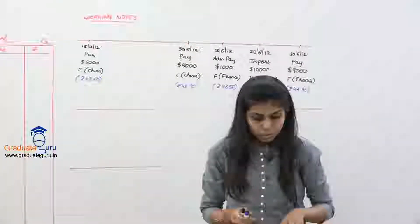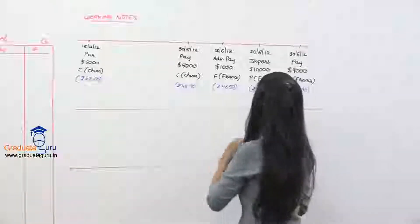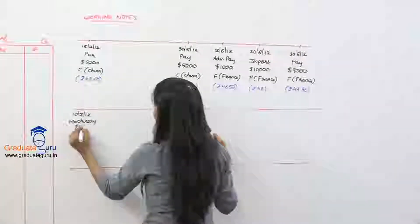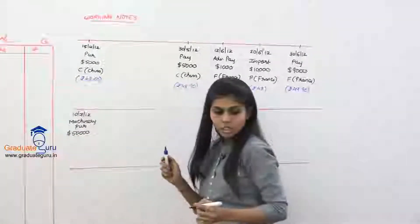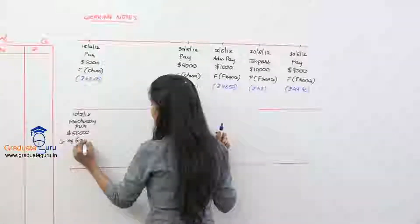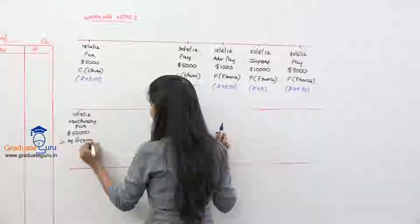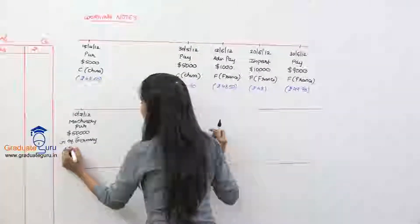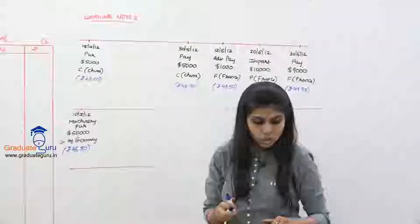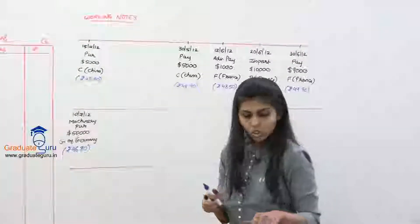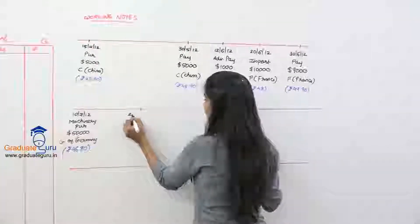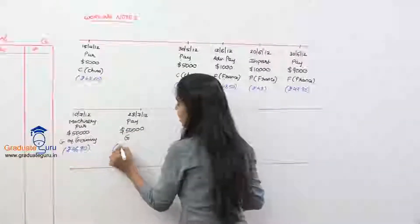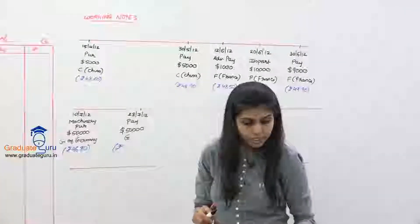On 10th July 2012, machinery is purchased from G of Germany for 50,000 dollars. The rate of exchange on that date is 1 dollar = rupees 46.80. Then on 28th July 2012, payment is made to G of Germany for the full 50,000 dollars. The payment rate is rupees 47.20.